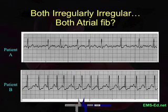Here's a good one — or good two. Patient A and Patient B: is one, the other, both, or neither atrial fib? You've got 30 seconds. Okay, time's up. Remember the definition for AFib: irregularly irregular with no discernible P waves. Both patients are irregularly irregular, but one patient has discernible P waves. Which one? Patient B.